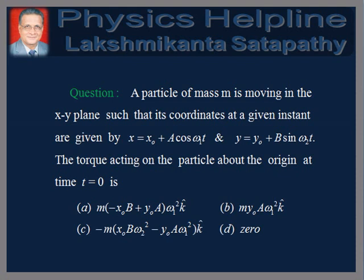The options are: M times (minus X₀B plus Y₀A) times ω₁² k̂; minus M times (X₀B ω₂² minus Y₀A ω₁²) times k̂; and zero.